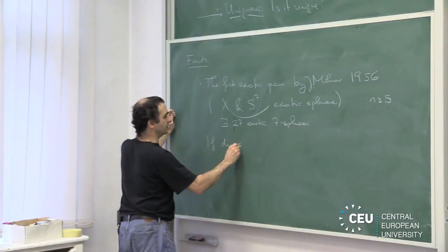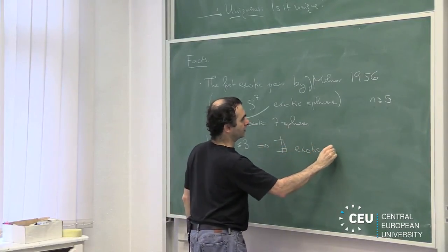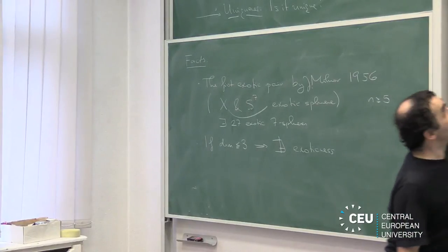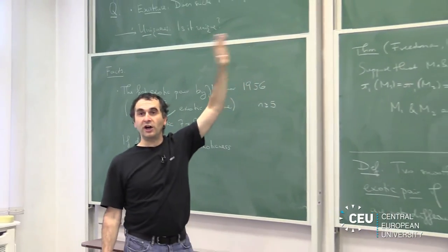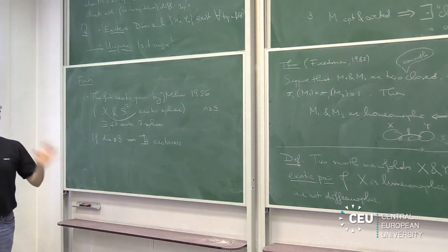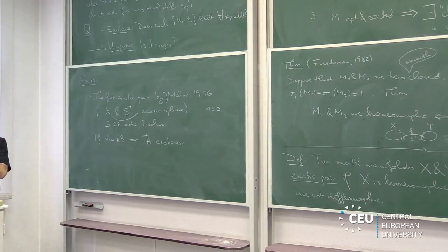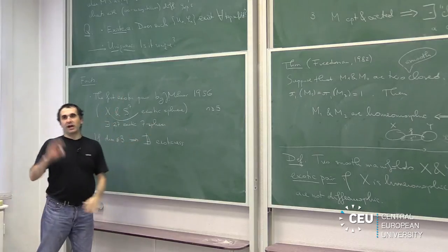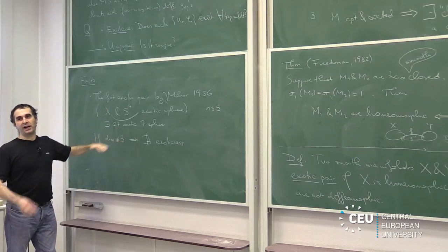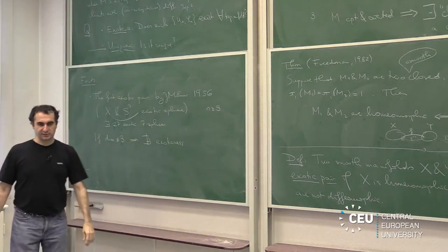If the dimension is less than or equal to three, then there is no exoticness. The uniqueness principle applies: you understand what the topological manifolds are, they all admit differentiable structures, and the differentiable structures are essentially unique. So our principle works nicely in these low dimensions. The case of dimension four I leave open for a moment. After that, there are complications, but they are mostly dealt with — we understand how many exotic structures exist.